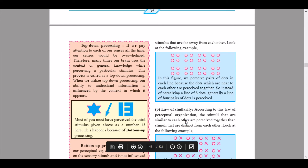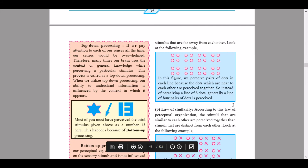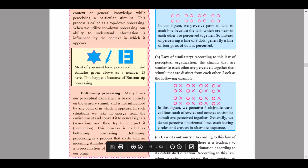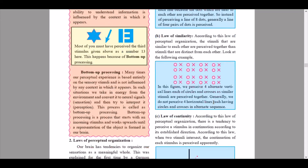The second law is the law of similarity. According to this law of perceptual organization, stimuli that are similar to each other are perceived together rather than stimuli that are distinct from each other. In the figure shown, we perceive four alternate vertical lines each of circles and crosses, as similar stimuli are perceived together. Generally we do not perceive four horizontal lines each having circles and crosses in alternate sequence.